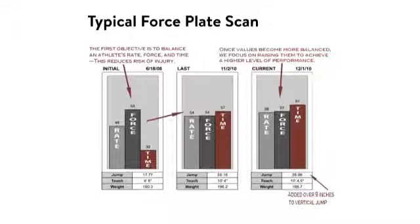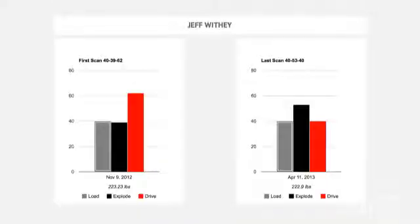Each one of those graphs depicts a different athlete — whether they're a rotational athlete, a reactive athlete, or an athlete who likes to run in a straight line. This is one of your actual athletes. Maybe you should start by saying who Jeff Withey is.